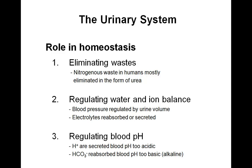If the internal body monitoring system senses that the blood pressure is too low, the kidneys will respond by lowering the volume of urine output to maintain body fluids to aid in stabilizing blood pressure. Conversely, if blood pressure readings are too high, then the kidneys will increase the volume of urine to decrease blood volume to bring down blood pressure.